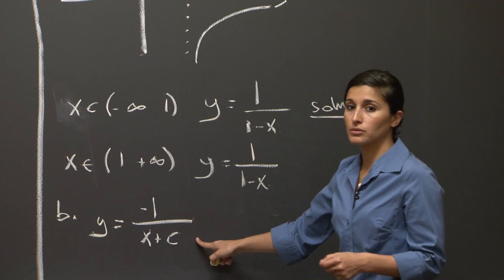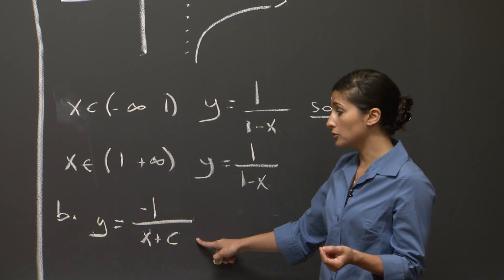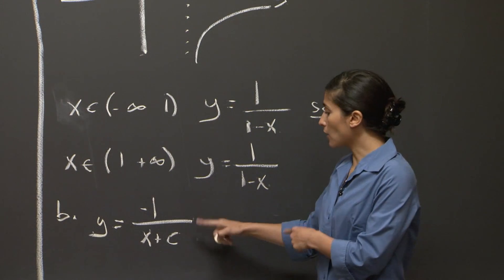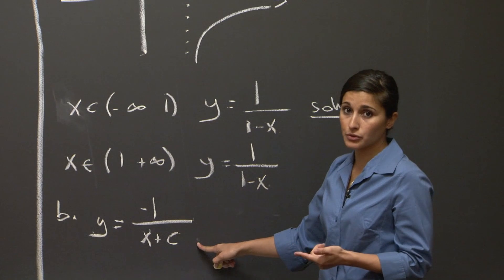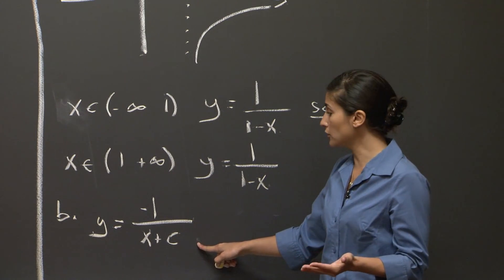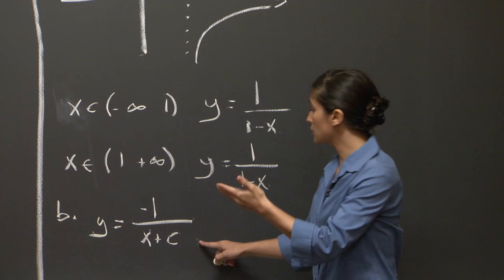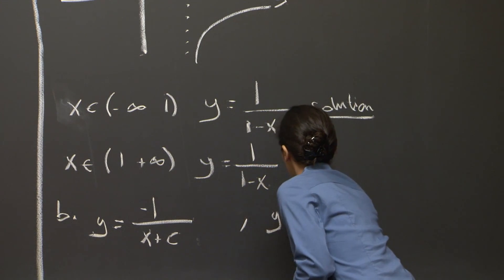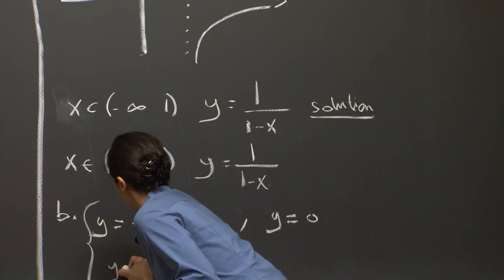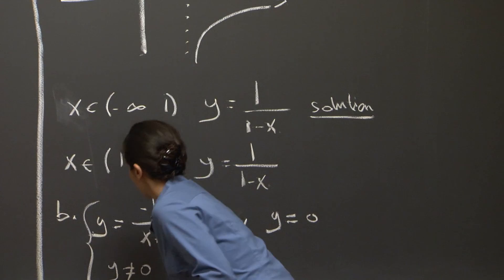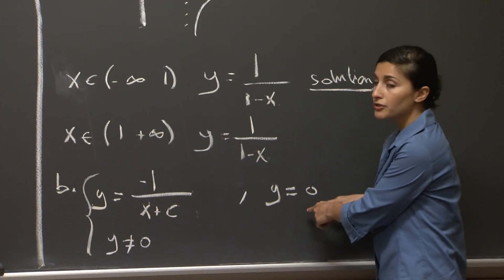But remember that we need to give all the solutions of the problem. So when we arrived at this solution, we excluded the solution that y equals 0, which was basically a lost solution, because we had to impose the condition y not equal to 0. So we need, when we give the general solution to this differential equation, to recover the lost solution.